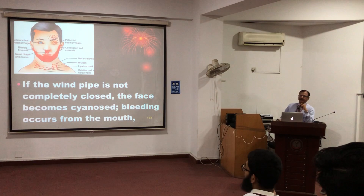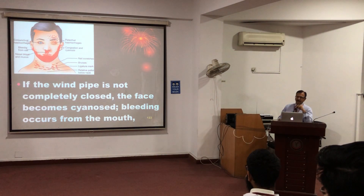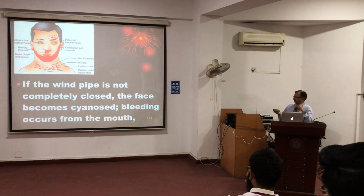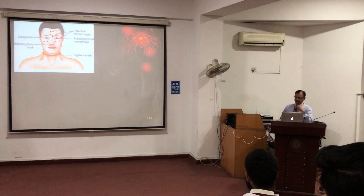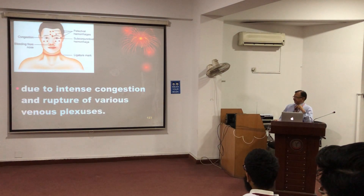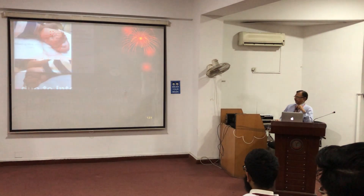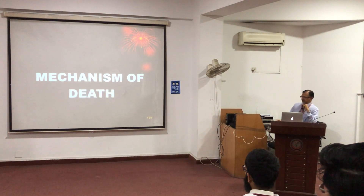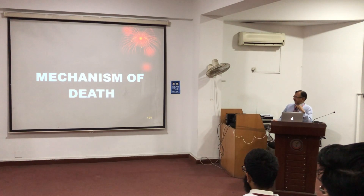If the windpipe is not completely compressed, then some respiration can continue, and in that case the symptoms of asphyxia will be deeply seen. The person will be deeply cyanosed and bleeding from the mouth and nose can be seen, which is due to congestion of the ruptured vessels because of the pressure. The hands can be clenched and will be cyanotic also.